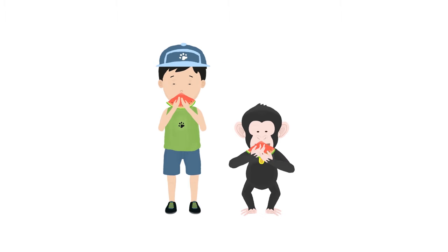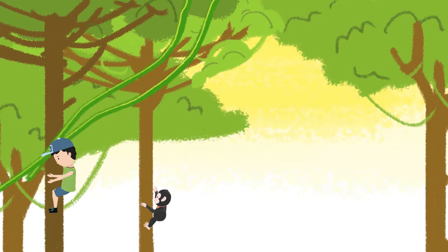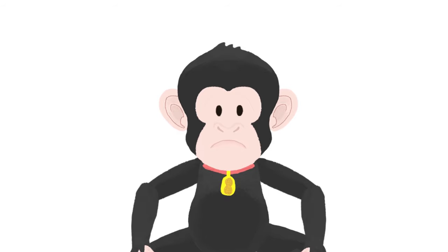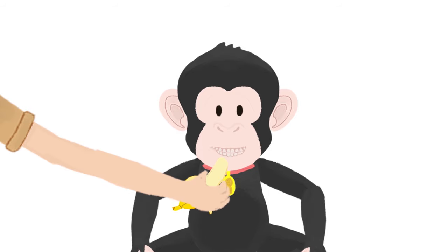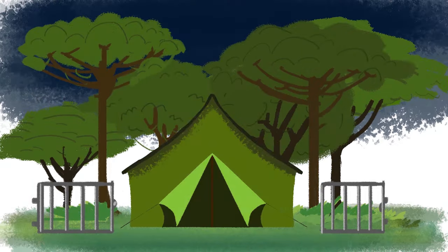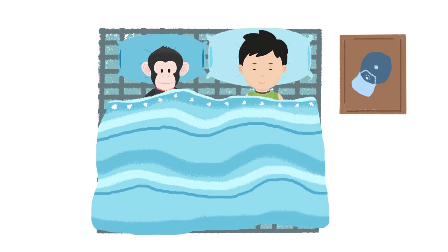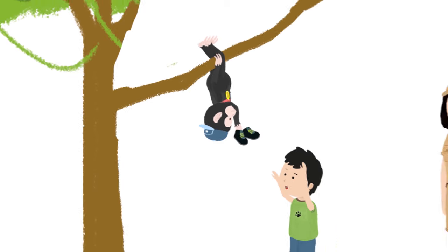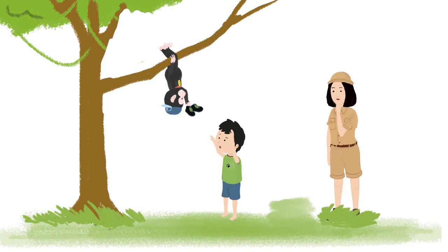They played together, ate together, and sometimes even got into trouble together. Peanut pouted cutely when he wanted nuts or fruits. Peanut would even sleep with John as he was still sometimes scared without his mom. Peanut's mischief provided everyone with entertainment.